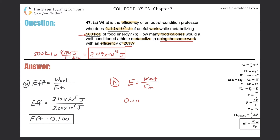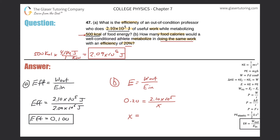Notice that the efficiency is a 100% increase — we doubled it from before. The work put out is going to be the same, so it's 2.10 times 10 to the 5. We solve for X, the energy input: X equals 2.10 times 10 to the 5 divided by 0.2. Plugging into the calculator: 2.1 times 10 to the 5 divided by 0.2 gives us 1.05.